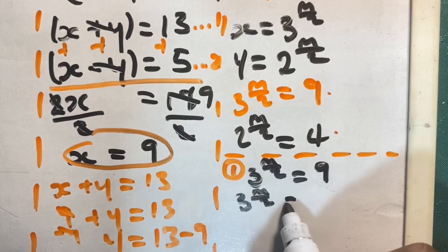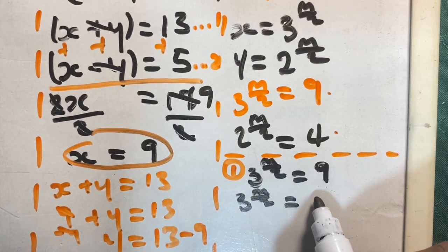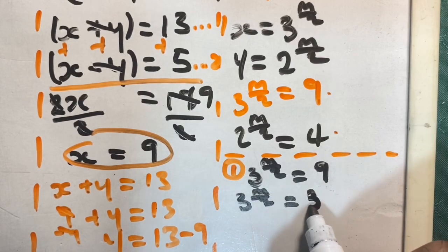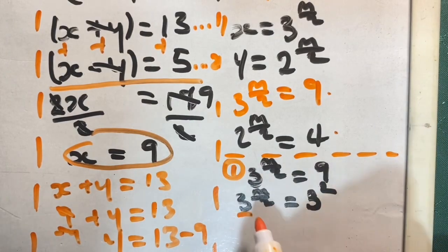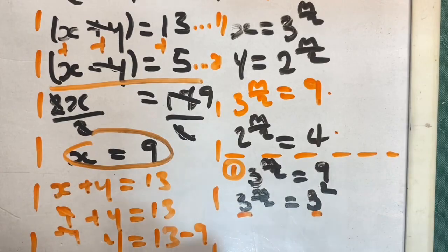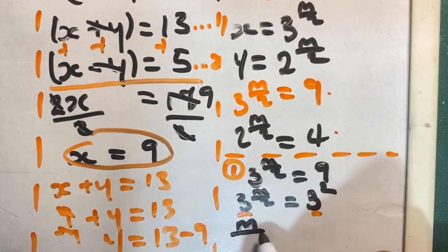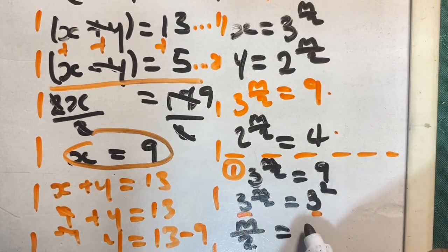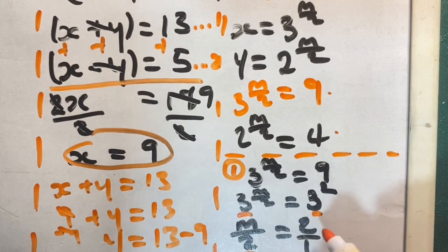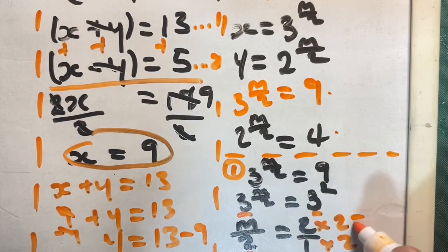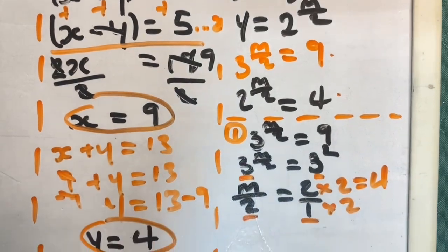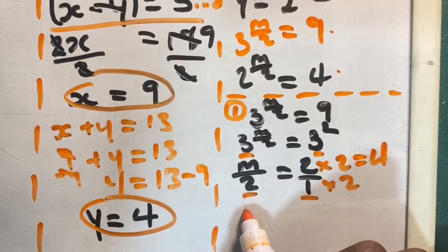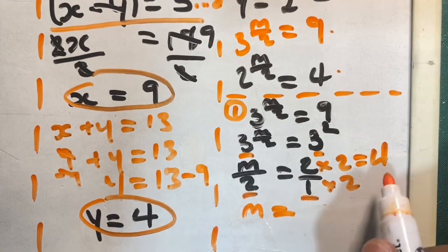Now 9 is the same as 3 to the power of 2, or 3 squared. Using our index rule, whenever we have the same base we can set the exponents equal to each other. So m over 2 is equal to 2, and 2 is the same as 2 over 1. We get the denominators to be the same by multiplying both top and bottom by 2, and doing this we see clearly that m is equal to 4.